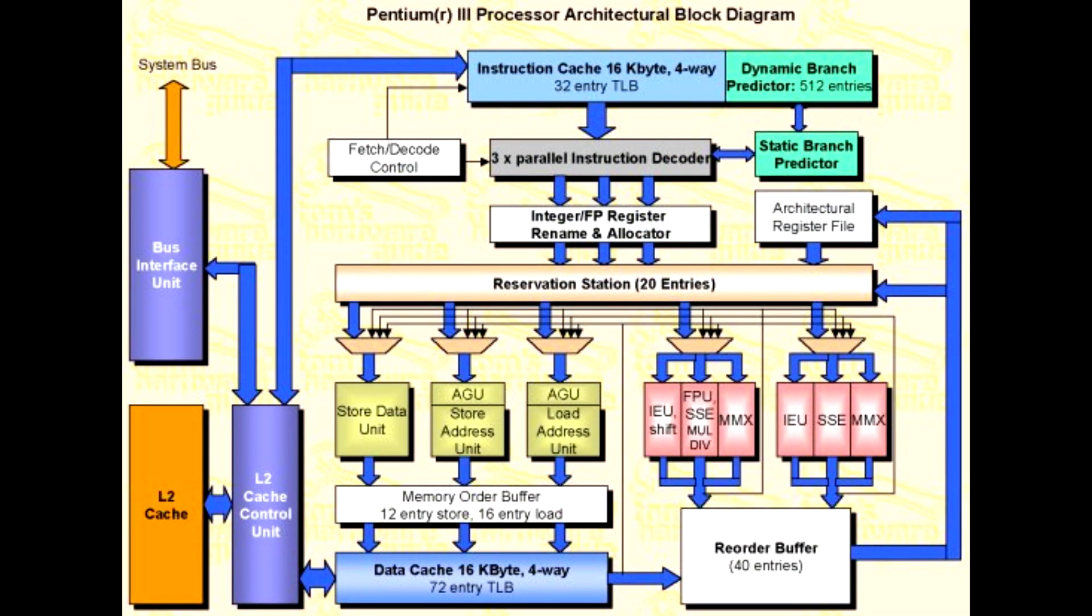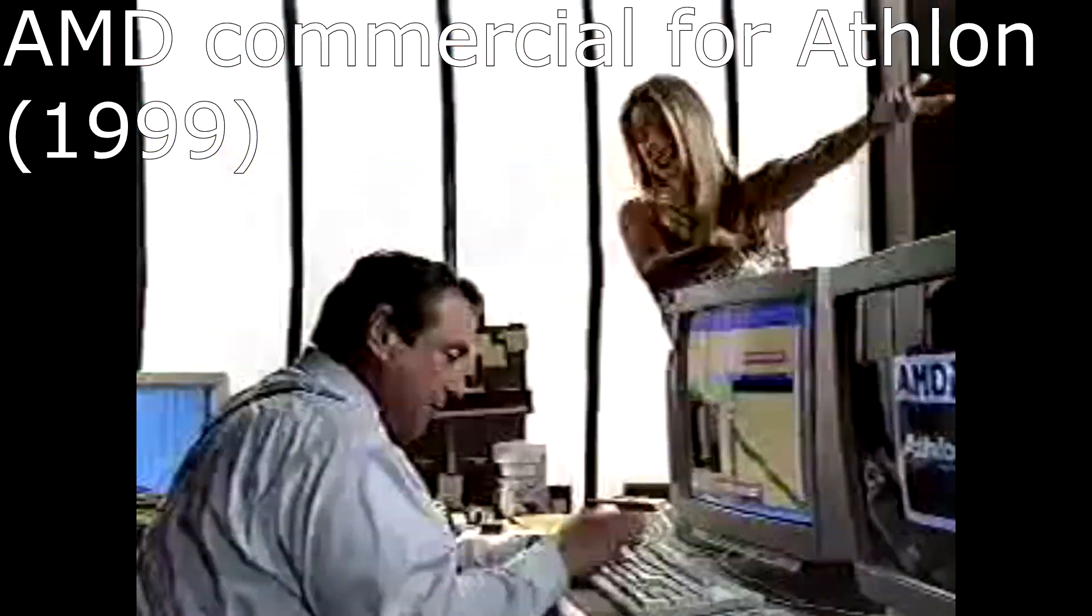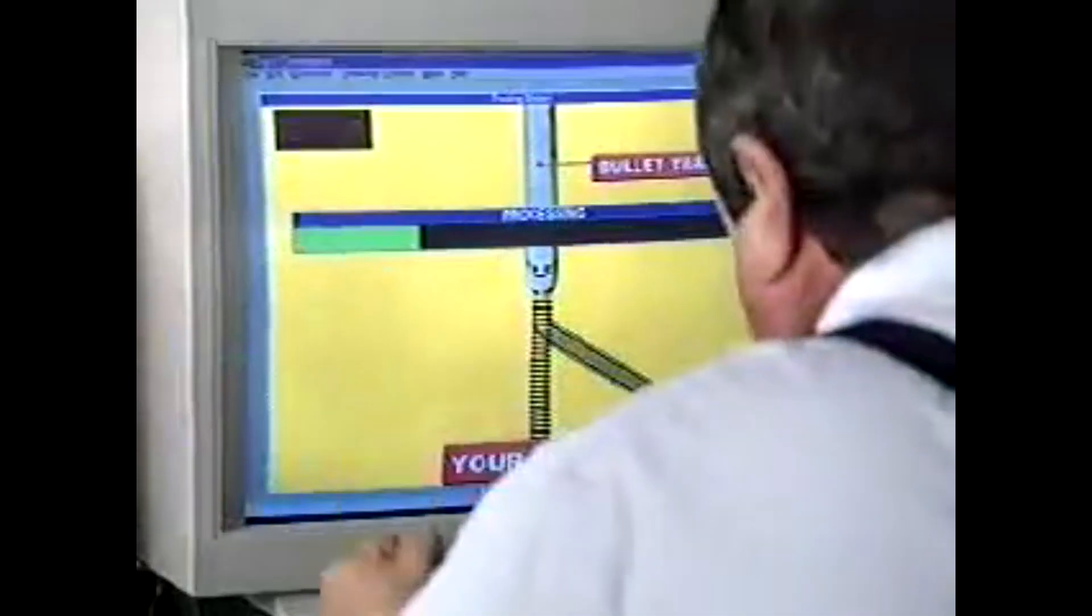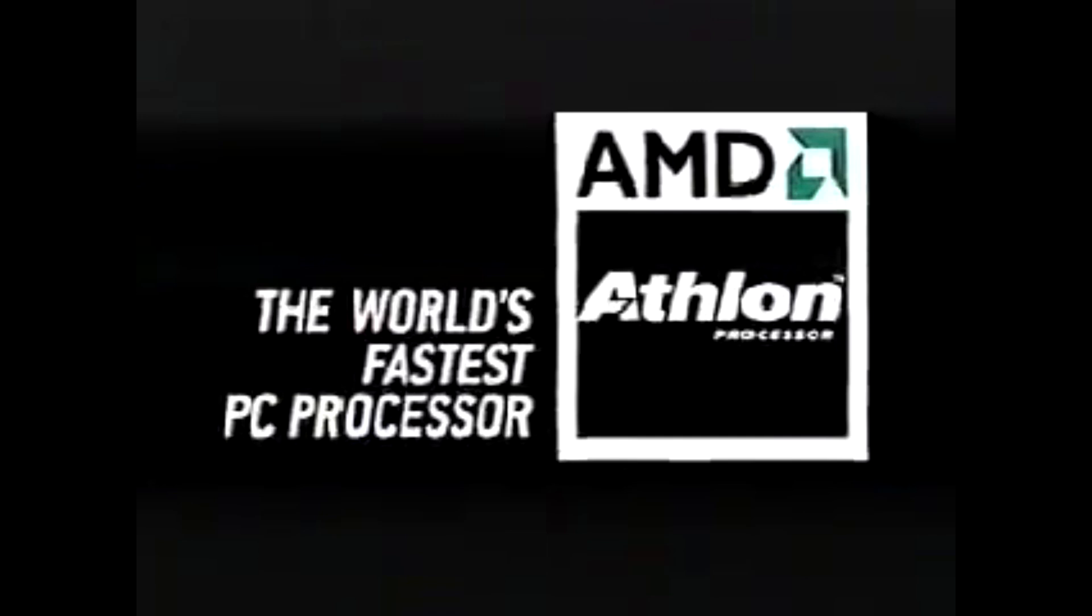This started about the turn of the century, back when AMD had lower clocked, higher IPC CPUs. Many people don't know there's a faster PC processor than Pentium 3 at any clock speed, the new AMD Athlon processor. That ad was part of a campaign from AMD that ran from 1999 into 2000 that was targeted at showing that clock speeds were not everything.